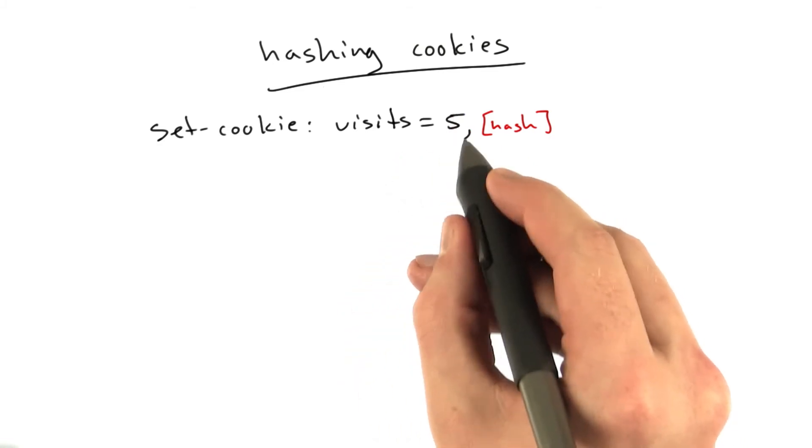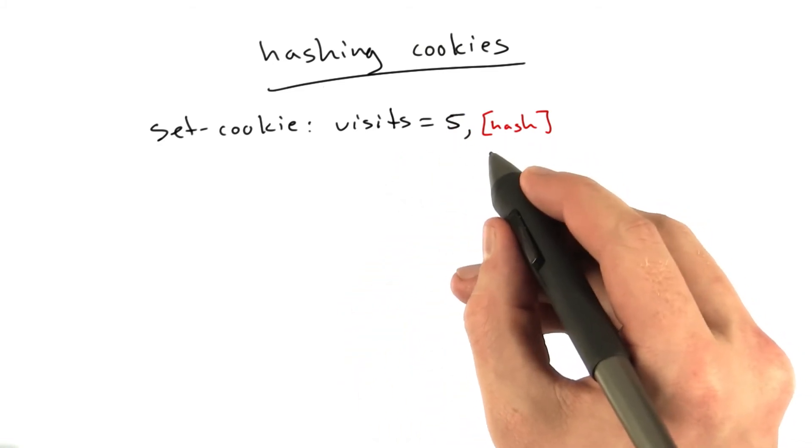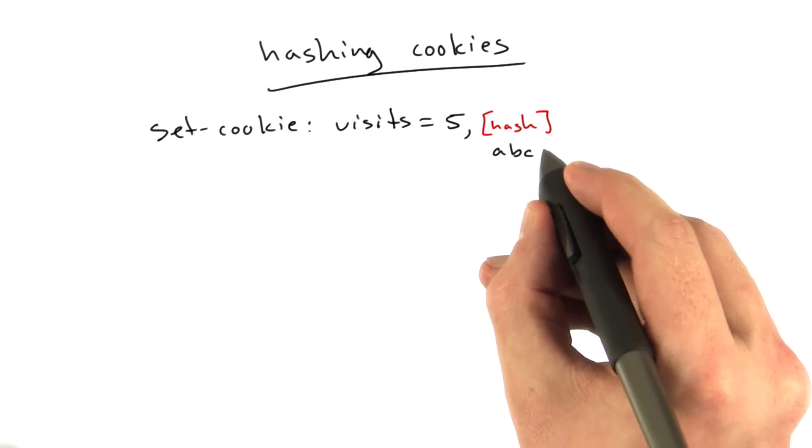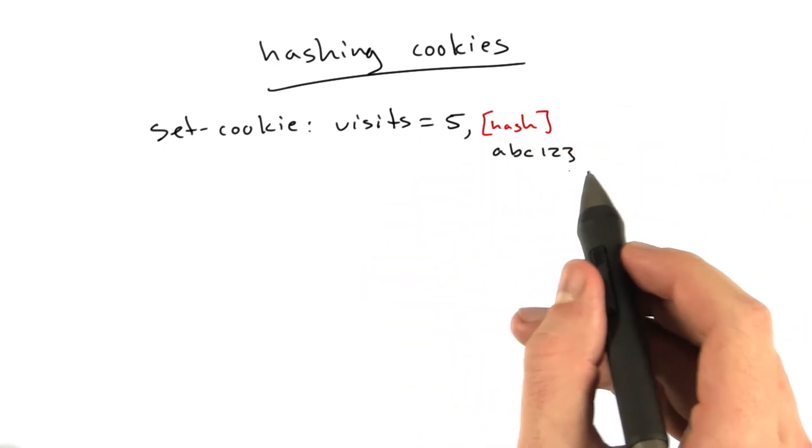So we send this cookie with 5 followed by our hex string, which is abc123. It'll be whatever the output of our hash was.